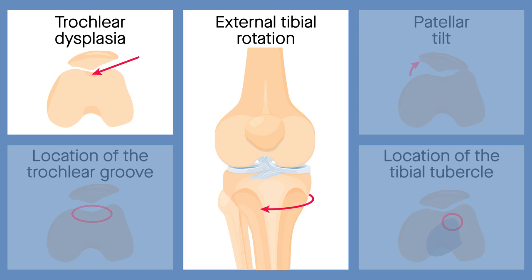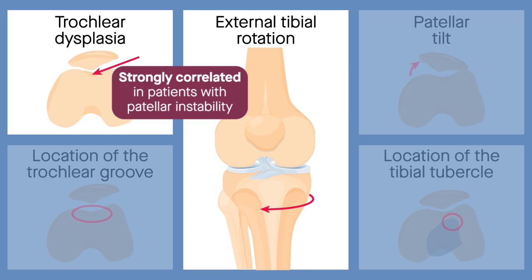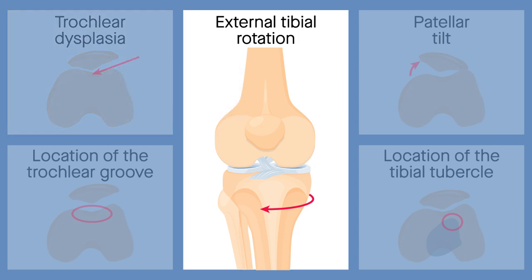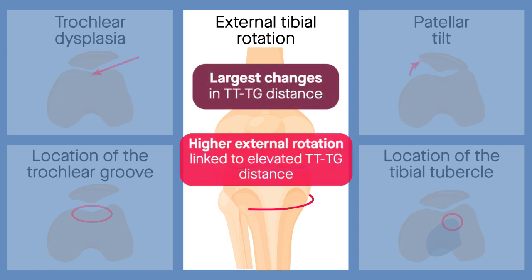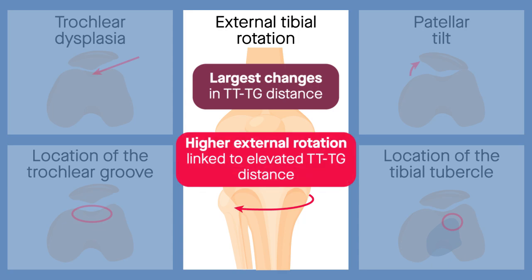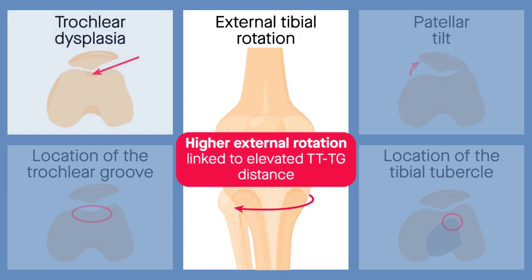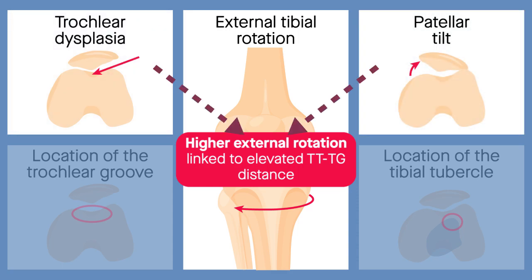Analysis revealed that external tibial rotation and trochlear dysplasia were strongly correlated in patients with patellar instability. In fact, among all variables analyzed, external tibial rotation was associated with the largest changes in TT-TG distance, with higher external rotation being linked to an elevated TT-TG distance. Meanwhile, trochlear dysplasia, as well as patellar tilt, was found to mediate this relationship.